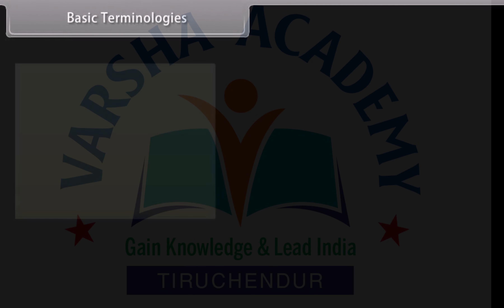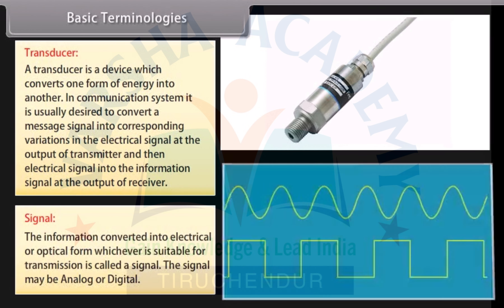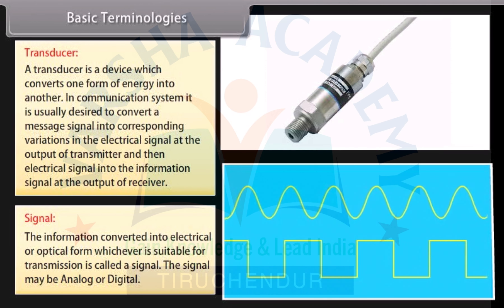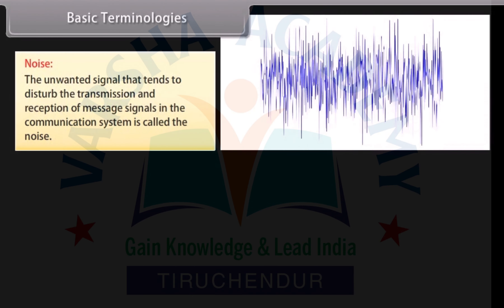Basic terminologies: A transducer is a device which converts one form of energy into another. In a communication system, it is usually desired to convert a message signal into corresponding variations in the electrical signal at the output of the transmitter, and then the electrical signal into the information signal at the output of the receiver. A signal is the information converted into electrical or optical form, whichever is suitable for transmission. The signal may be analog or digital. Noise is the unwanted signal that tends to disturb the transmission and reception of message signals.